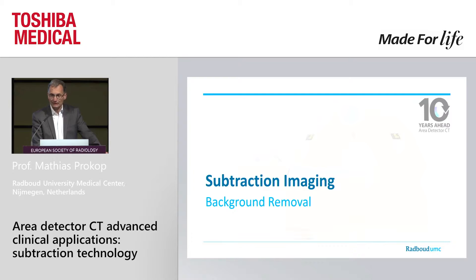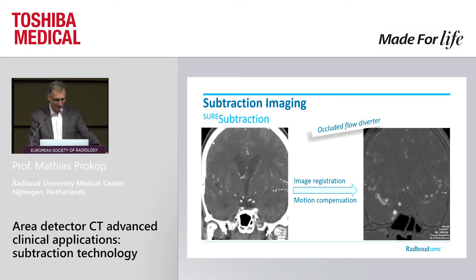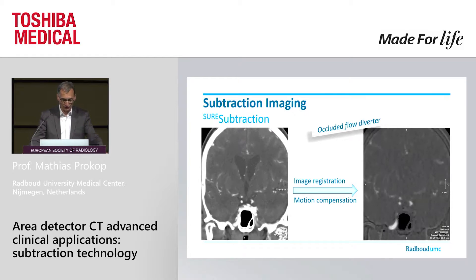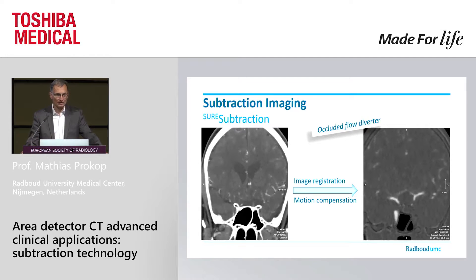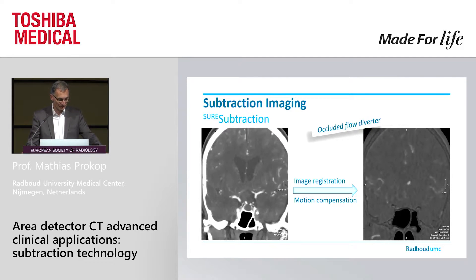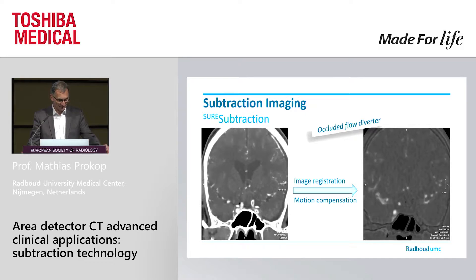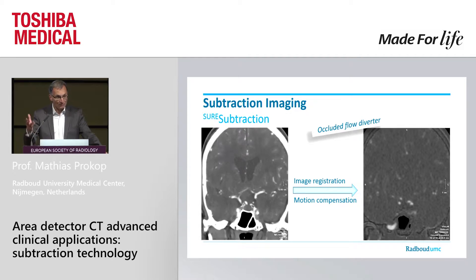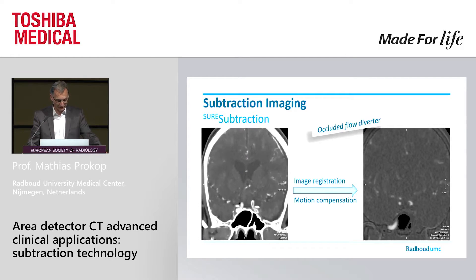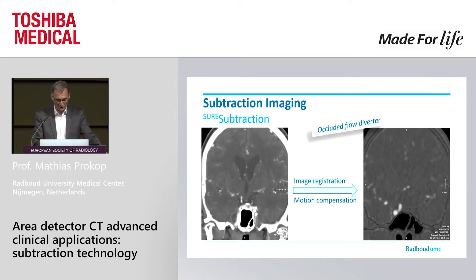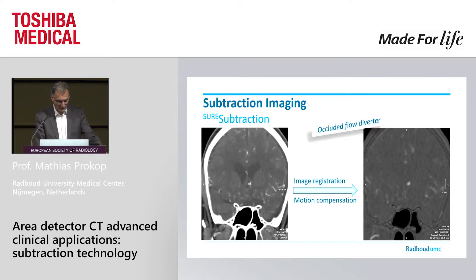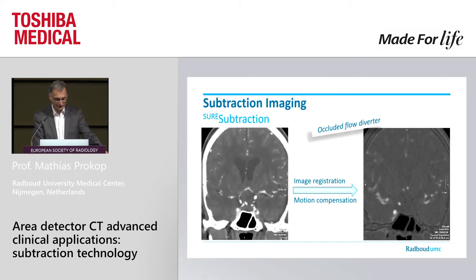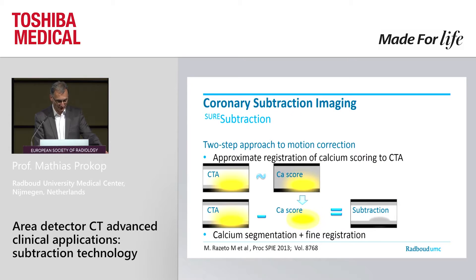The main application in many clinical situations is background removal. Here's an example of a patient with a flow diverter, where if you look at the pre-contrast scan, you're not so sure whether there is some residual enhancement in the proximal carotid. There seems to be a thrombus there, but is there still some marginal flow at the rim? If you look at the subtraction, basically the flow diverter is completely occluded — a superb evaluation in situations where we have high-density objects.